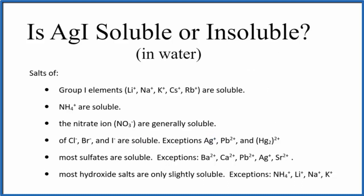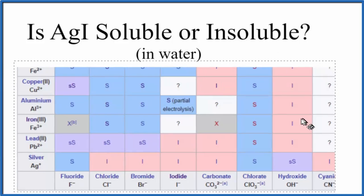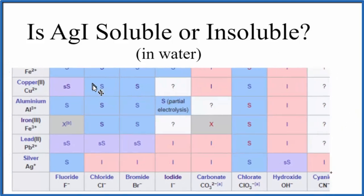We could also look at a solubility chart. So here's the chart or a portion of it. Find silver right here, Ag+, and then iodide right here. That's that I minus.